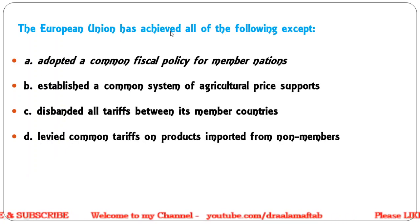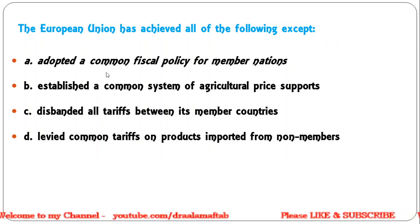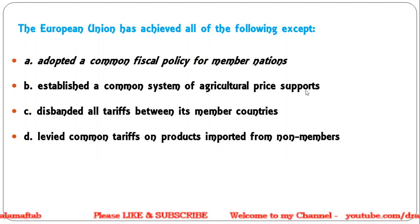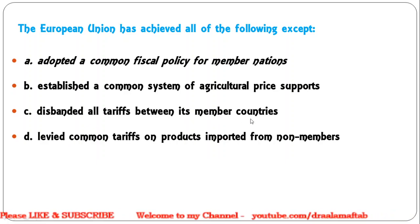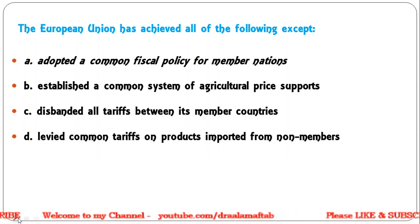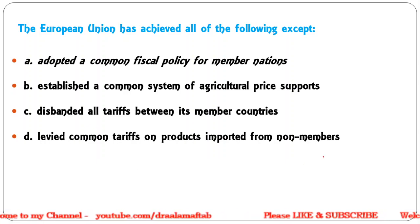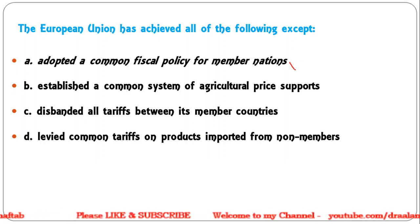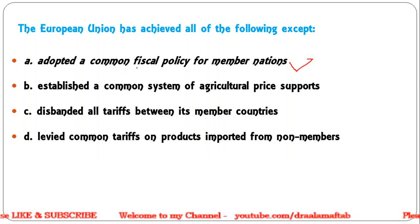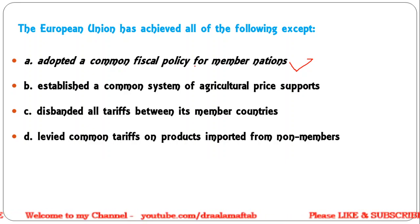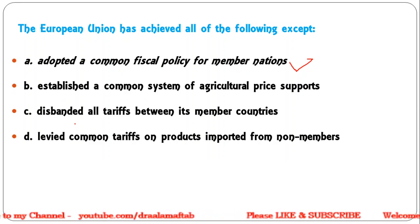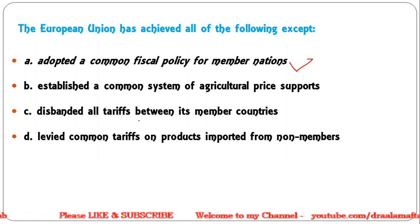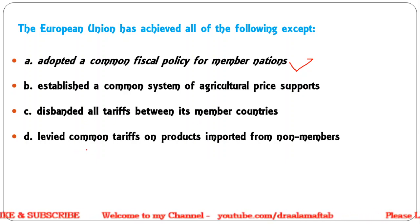Next: The European Union has achieved all of the following except — adopted a common fiscal policy for member nations; established a common system of agricultural price supports; disbanded all tariffs between its member countries; levied a common tariff on products imported from non-member countries. Correct answer is A — the EU has not adopted a common fiscal policy for member countries. They do have a common agricultural price support system, no tariffs among members, and a common external tariff for non-members.